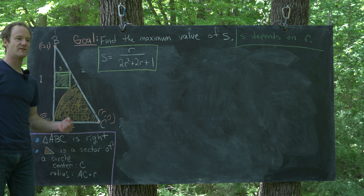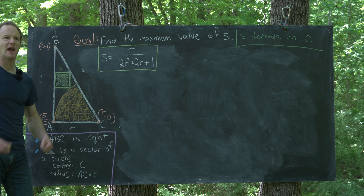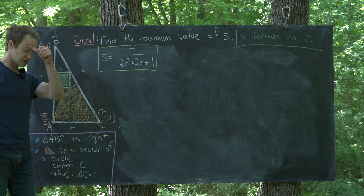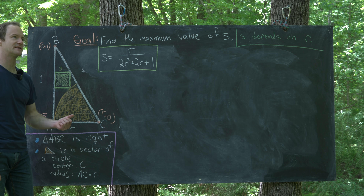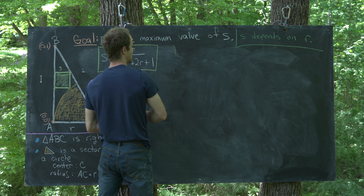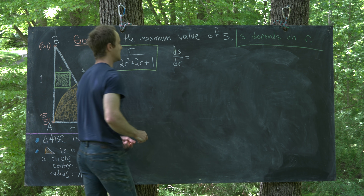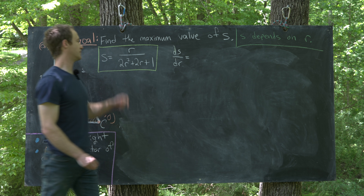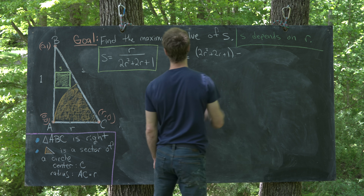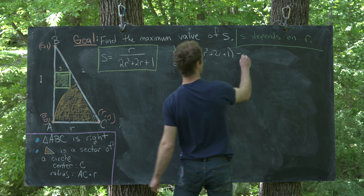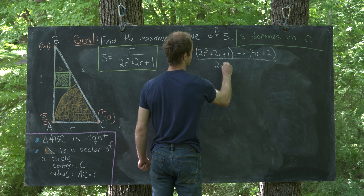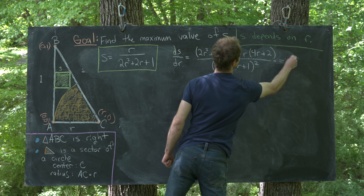Now we want the value of r that maximizes s, which we find using first-semester calculus. Maxima and minima occur at critical points where the derivative equals zero. Using the quotient rule, ds/dr = [(1)(2r² + 2r + 1) − r(4r + 2)] / (2r² + 2r + 1)².